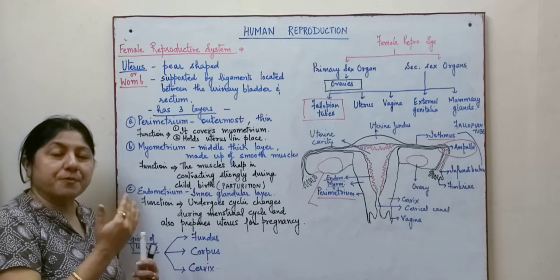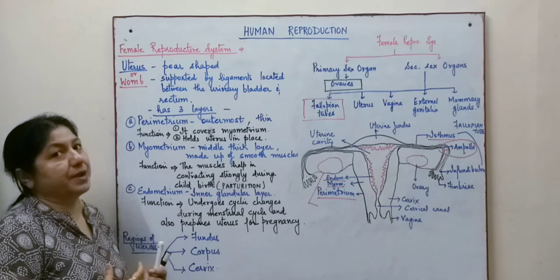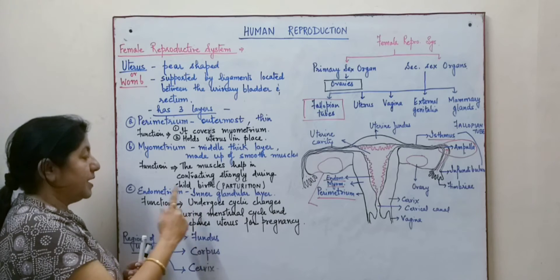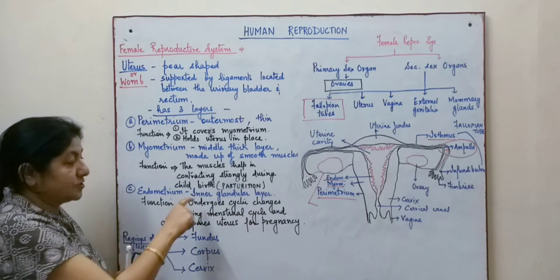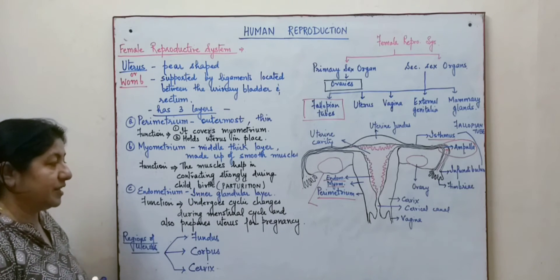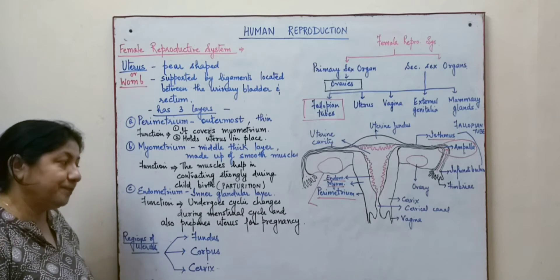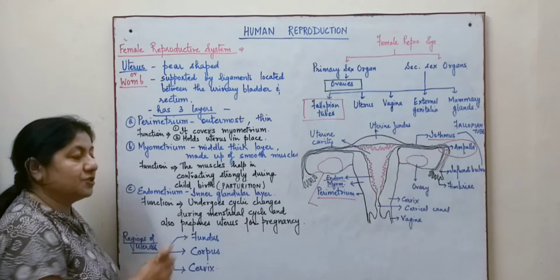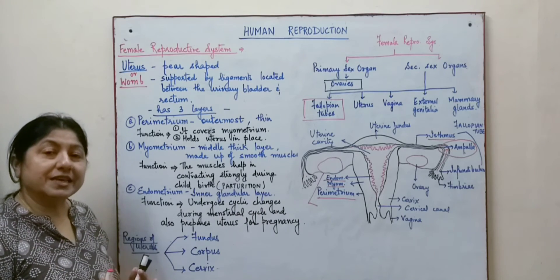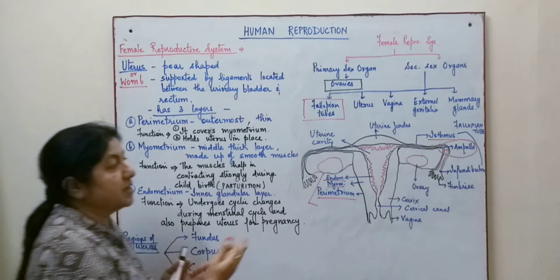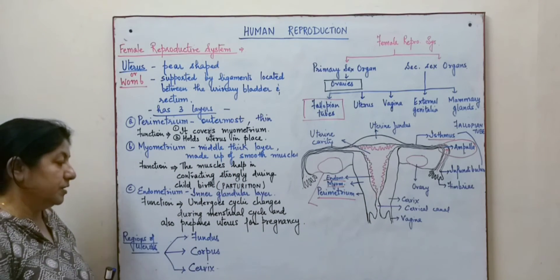The endometrium is affected by hormonal secretions and as a result, it prepares every month for receiving the ovum and its implantation. So the endometrium undergoes cyclic changes — this innermost glandular layer changes during the menstrual cycle and also prepares the uterus for pregnancy. When pregnancy occurs, the baby is nourished and its development takes place here.